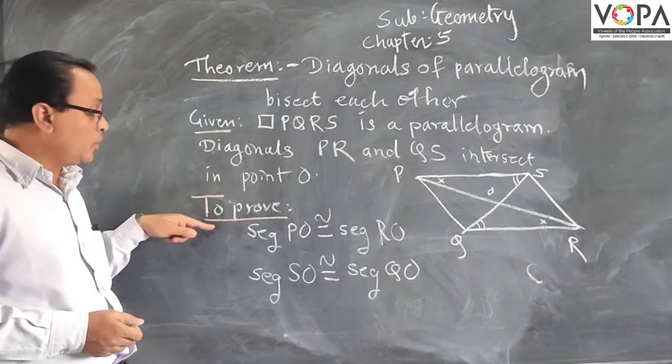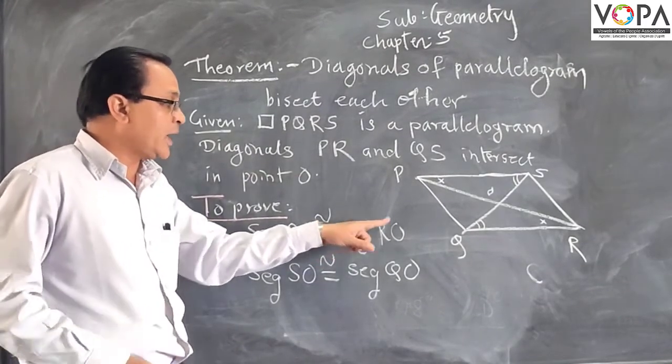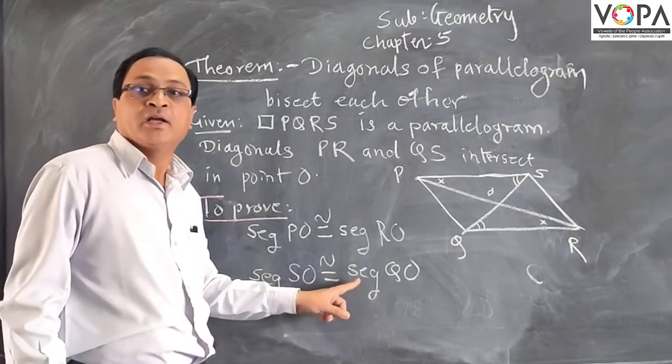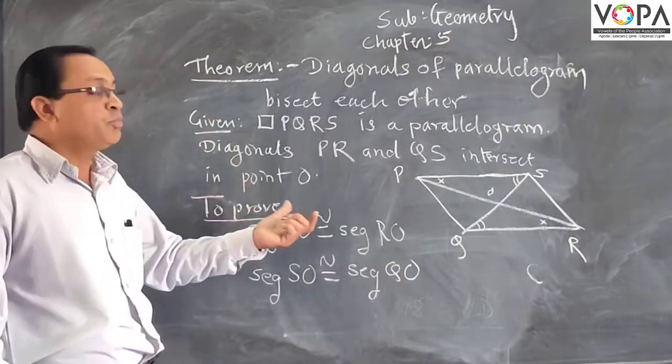Let us write the proof. To prove: segment PO is equivalent to segment RO and segment SO is equivalent to segment QO. Let us see the proof.